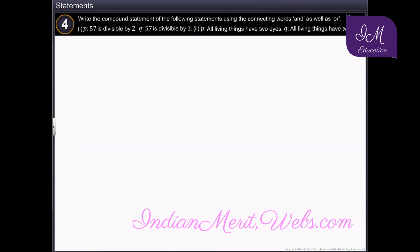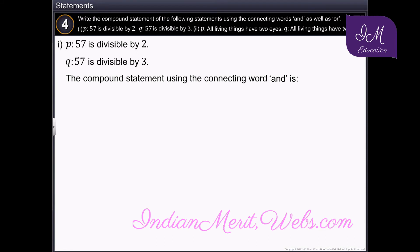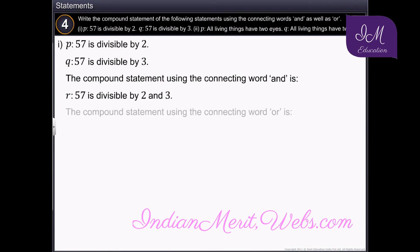The given statements are: 57 is divisible by 2, and 57 is divisible by 3. The compound statement using the connecting word 'and' is: 57 is divisible by 2 and 3. The compound statement using the connecting word 'or' is: 57 is divisible by 2 or 3.